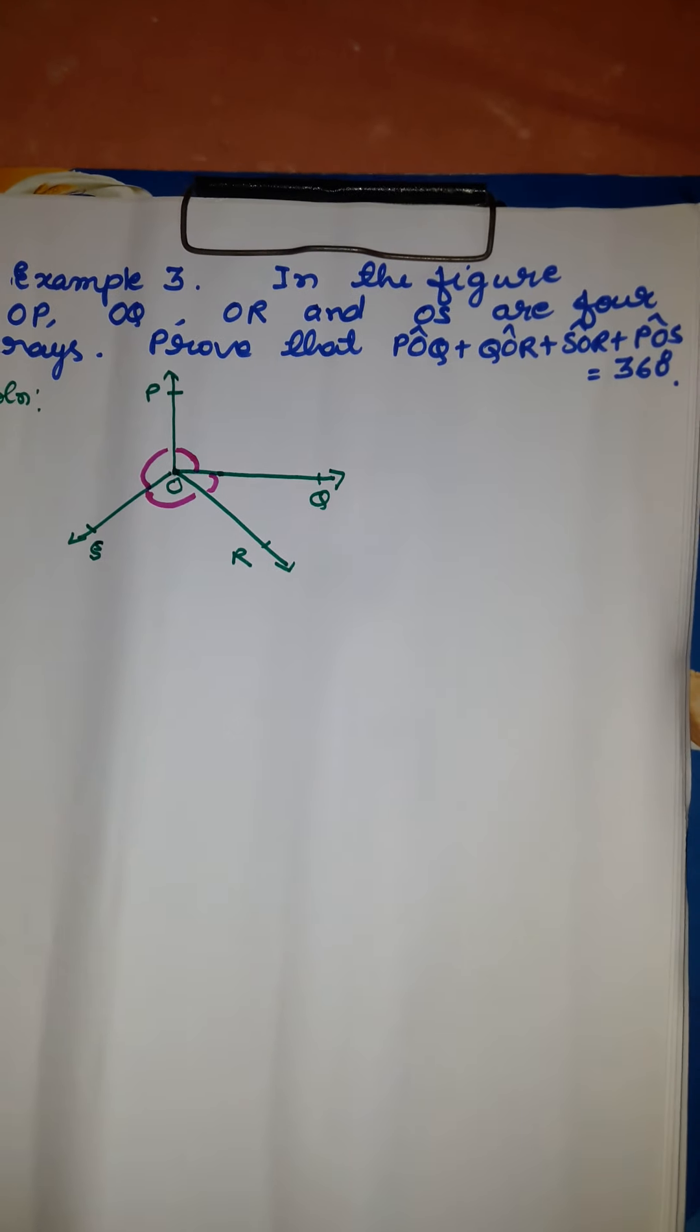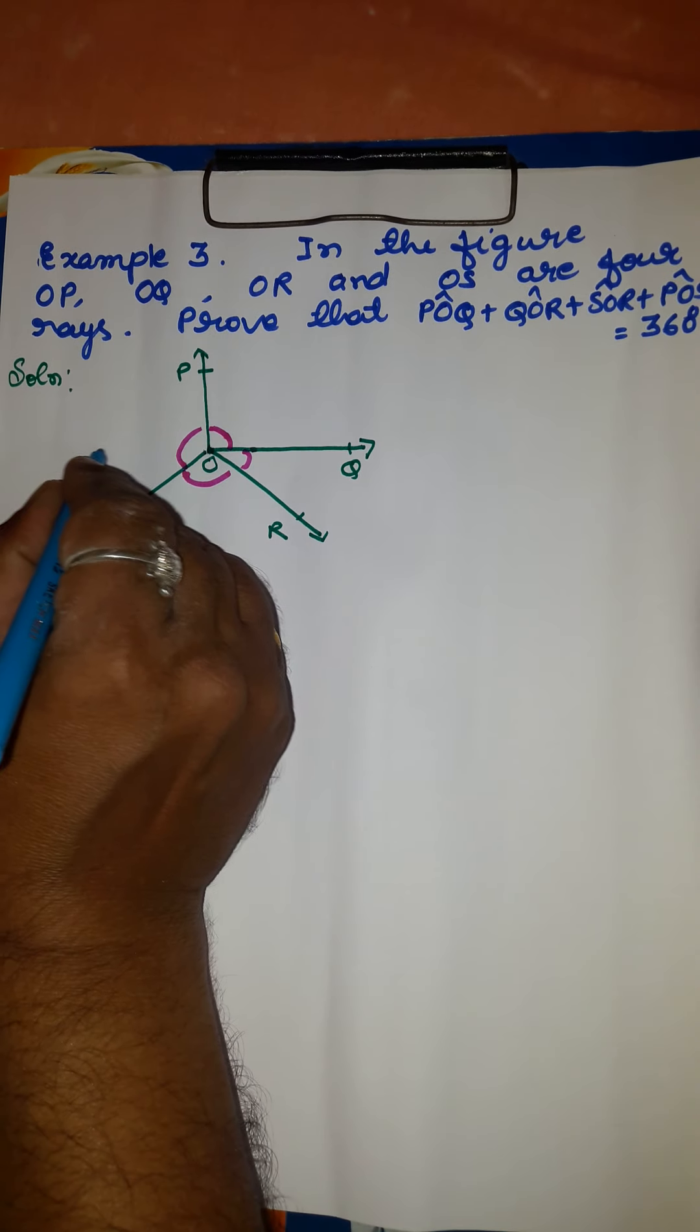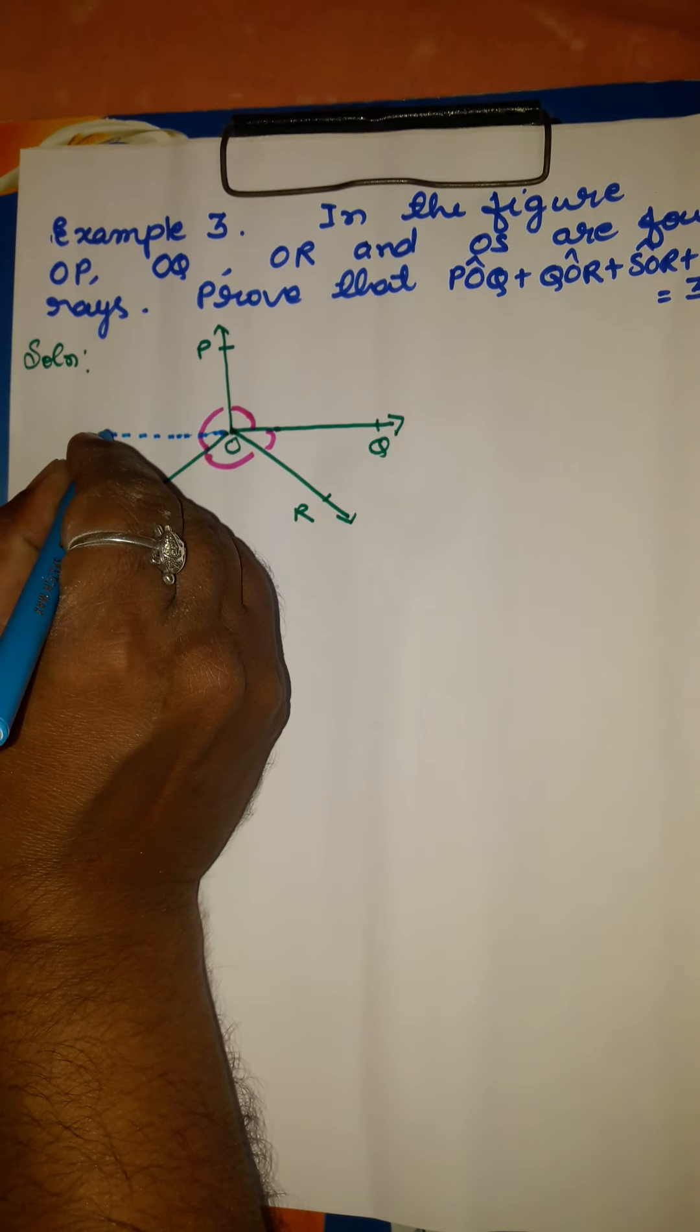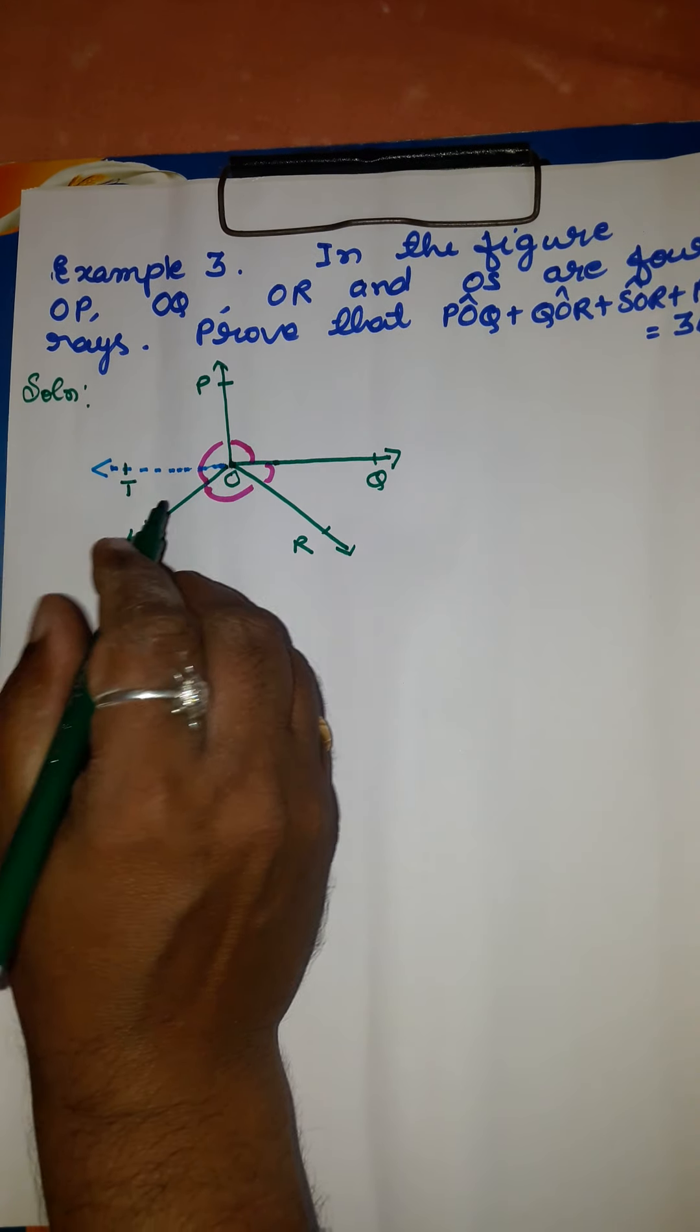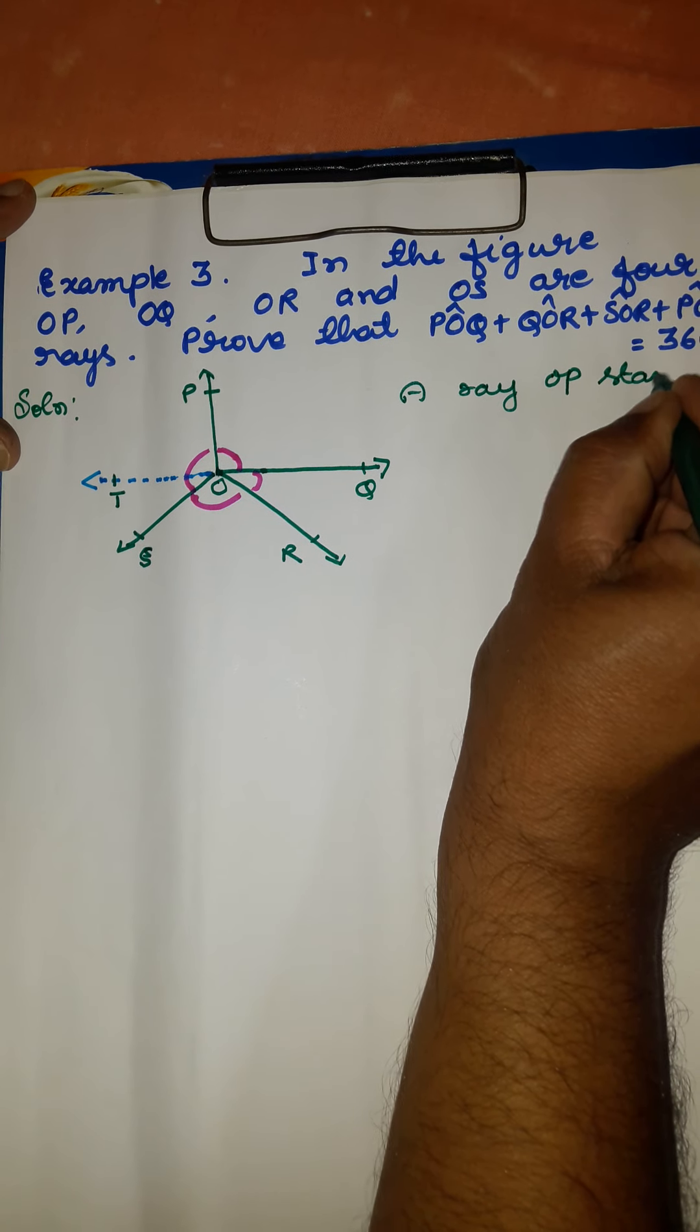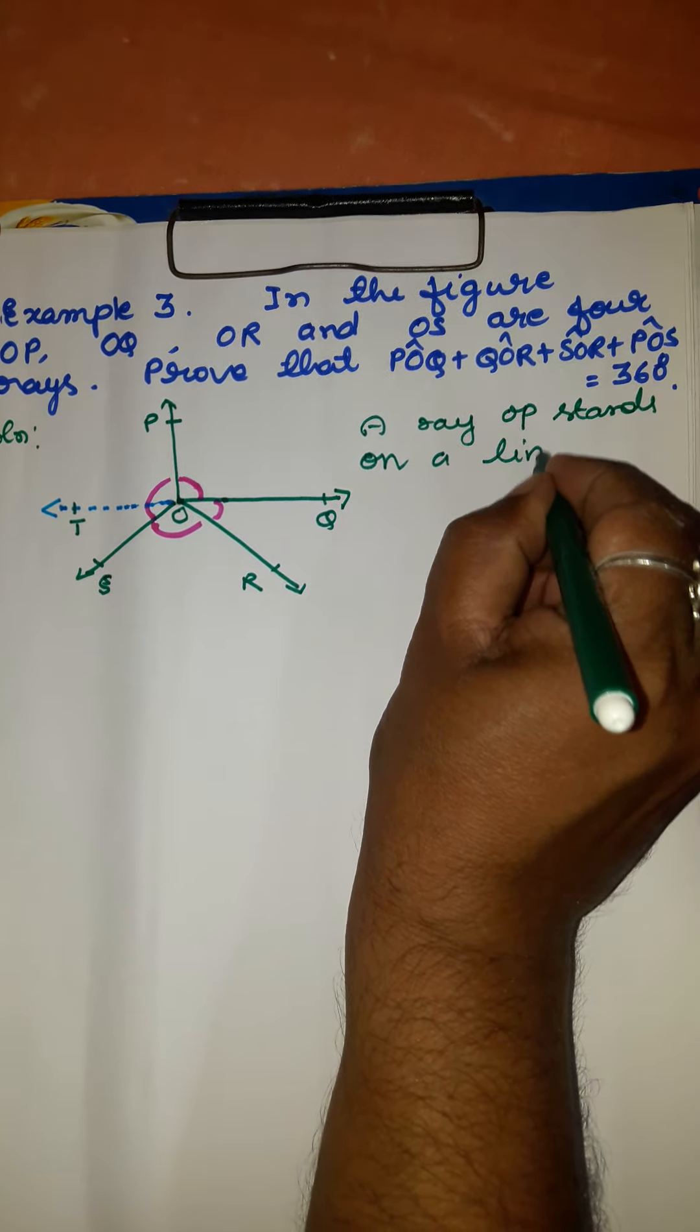Before solving, I have to produce ray OQ backwards. The dotted line shows that I am producing ray OQ backwards to point T. Call this point T. Ray OP stands on line TQ.